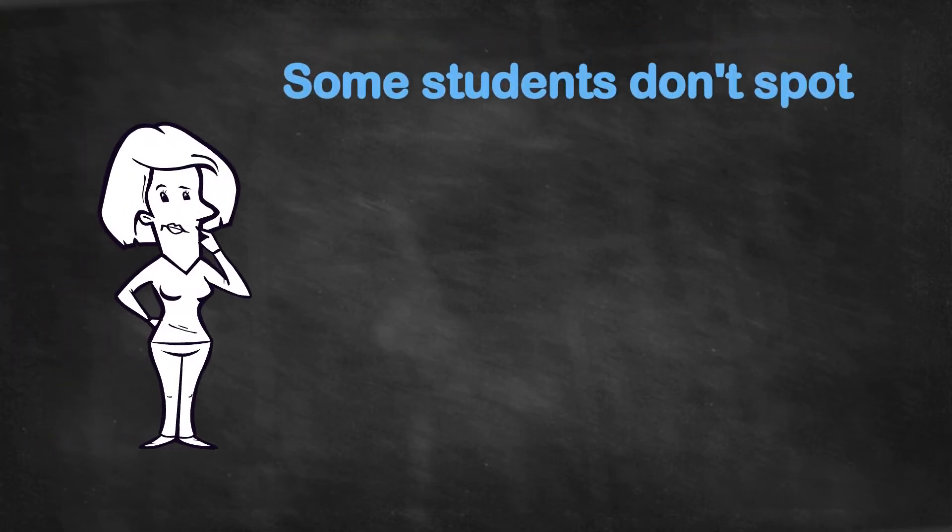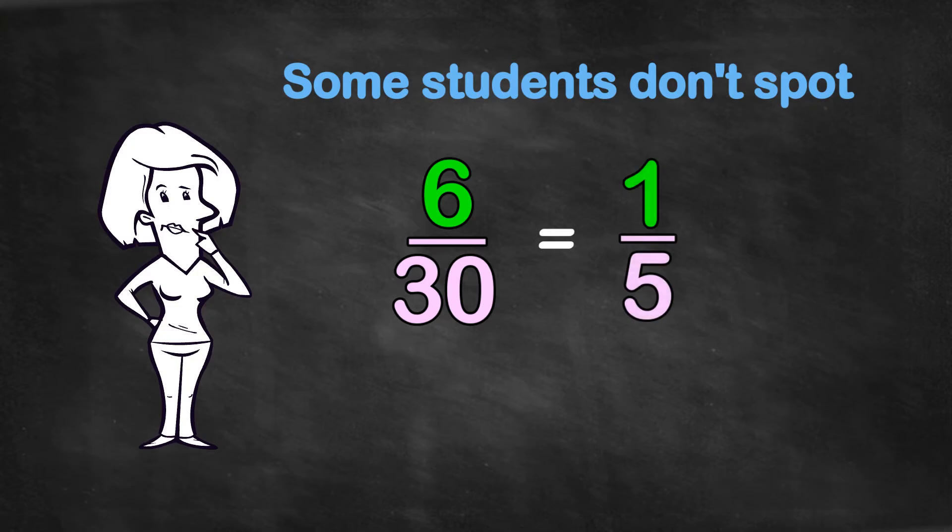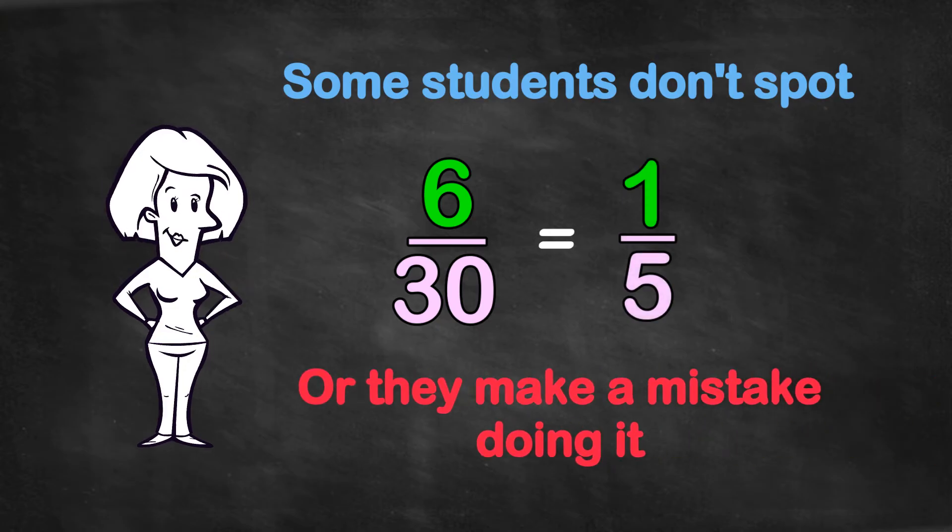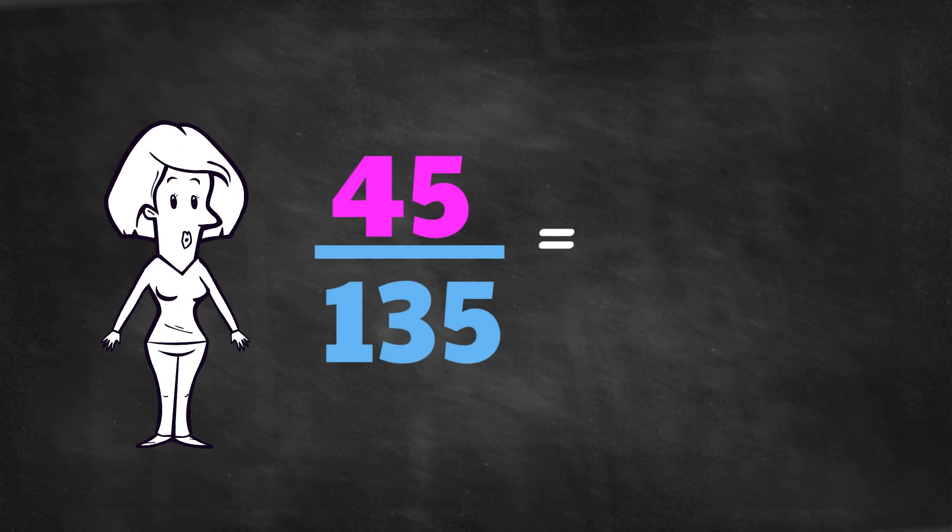But some students don't spot that our 6 over 30 fraction can be reduced, or they make a mistake doing it. And how about when the numbers are bigger than this example? Would it seem more difficult to you?